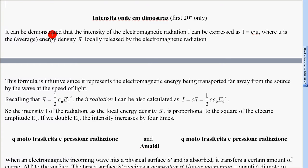It can be demonstrated that the intensity of the electromagnetic radiation, I, can be expressed as I equal to C times U, where U is the average energy density locally released by the electromagnetic radiation.